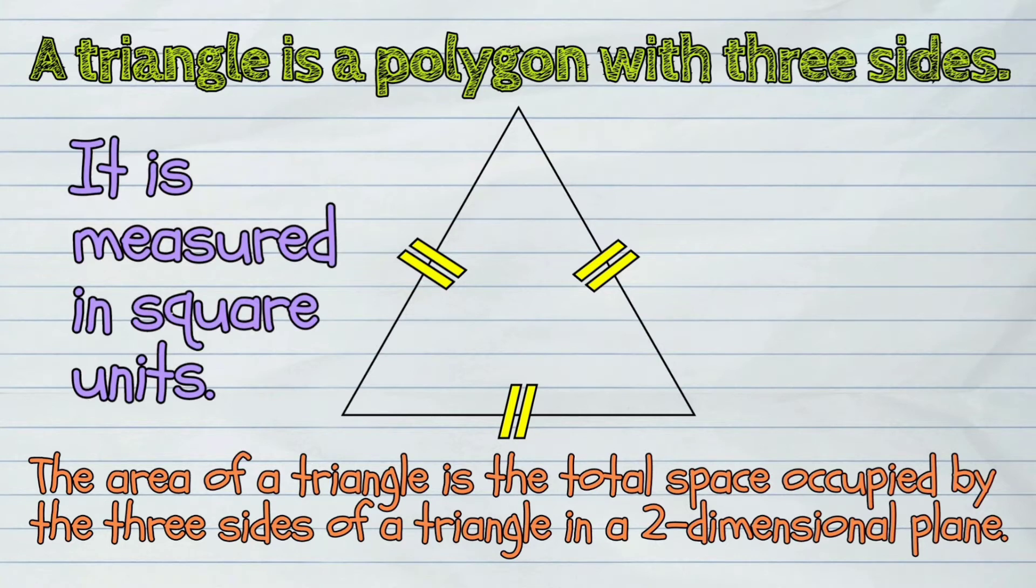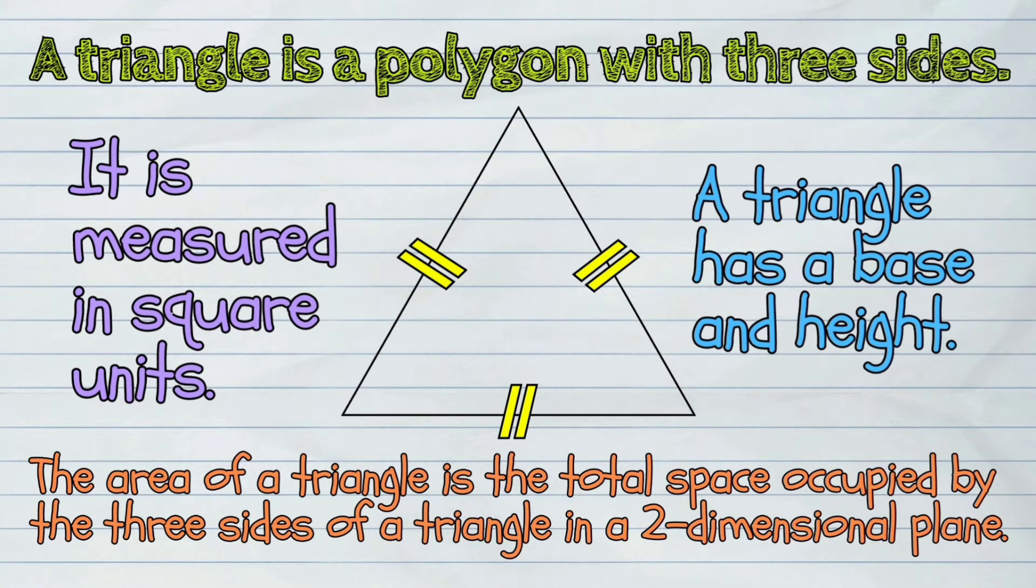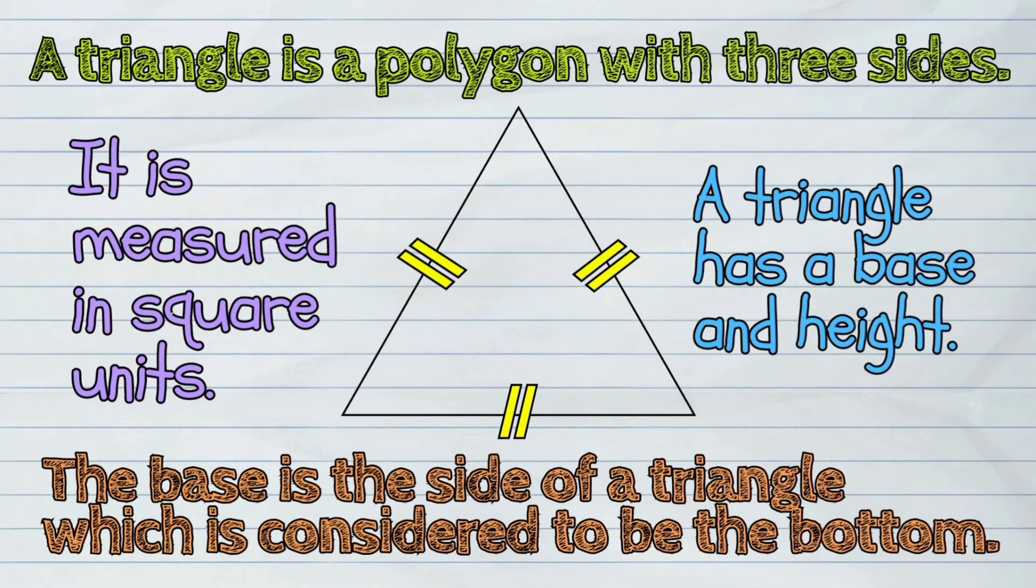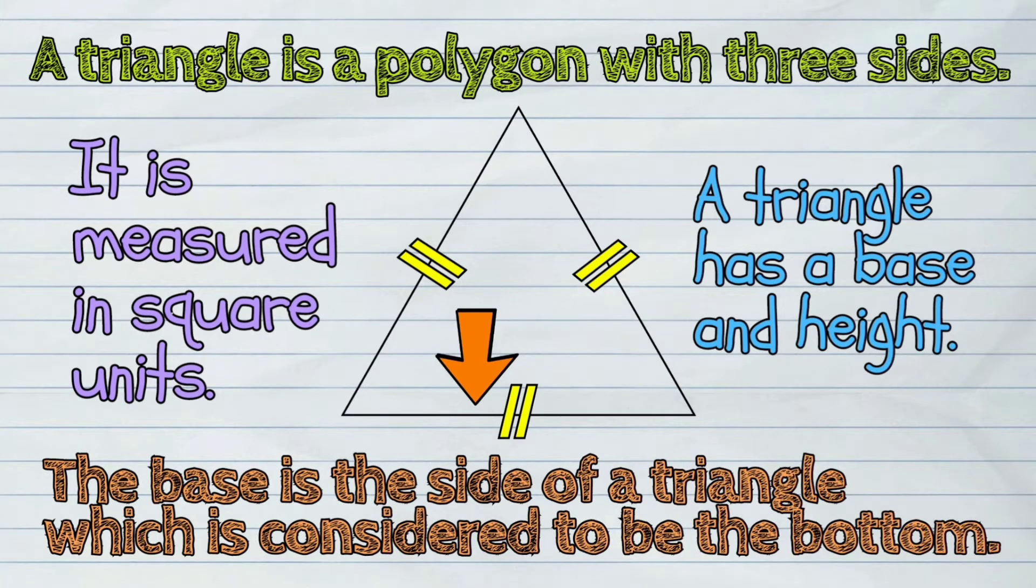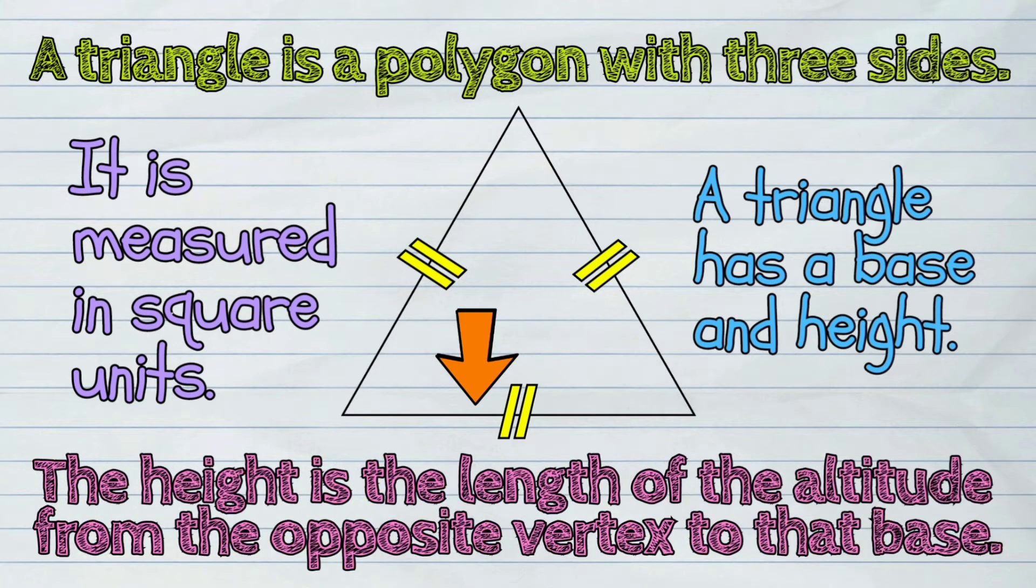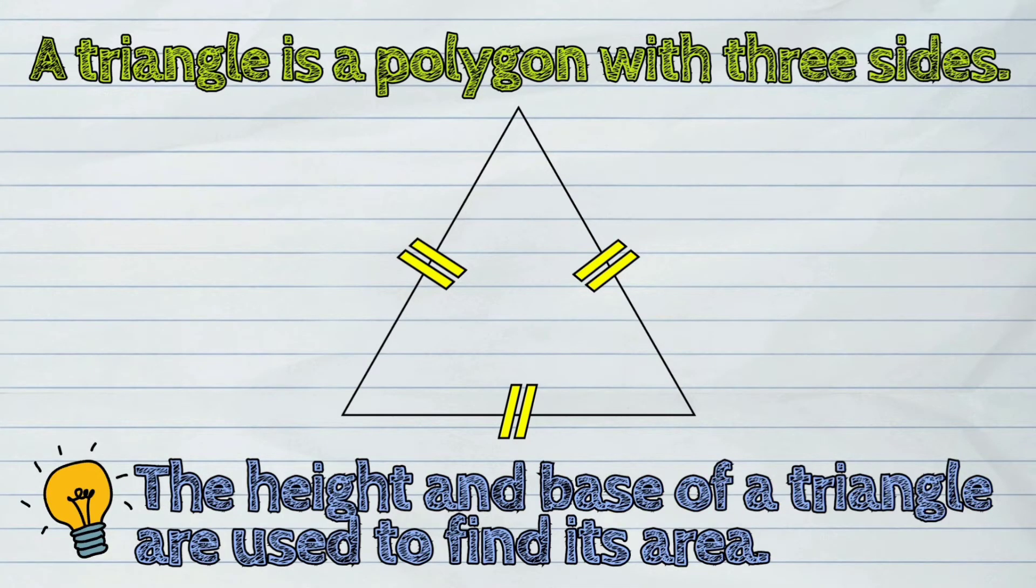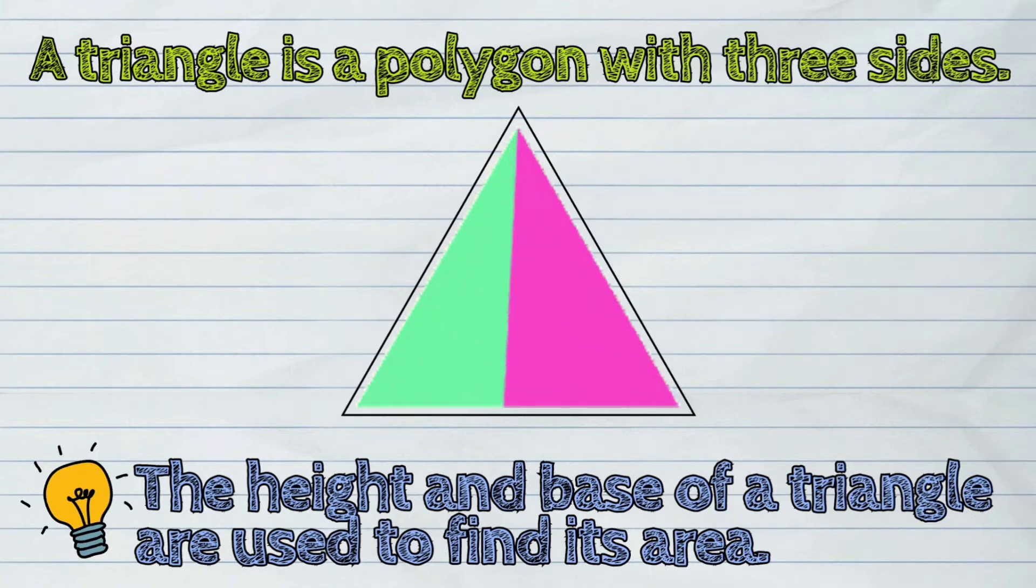It is measured in square units. A triangle has a base and height. The base is the side of a triangle which is considered to be the bottom, while the height is the length of the altitude from the opposite vertex to that base. The height and base of a triangle are used to find its area.